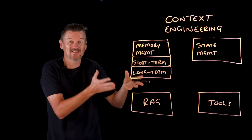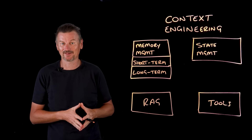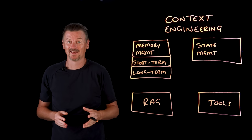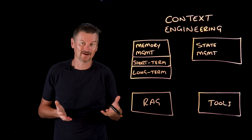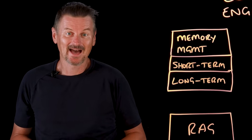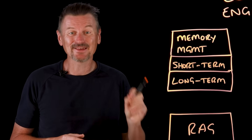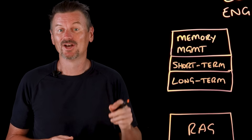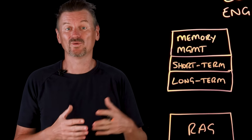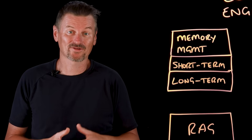Agents also need access to tools so they can actually go out and do things. LLMs by themselves can't check real databases, call APIs, or execute code — it's tools that bridge that gap. A tool might query a SQL database, fetch live pricing data, or deploy infrastructure. Context engineering defines the interfaces that guide the LLM toward correct usage, and tool descriptions specify what the tool does, when to use it, and what constraints apply.